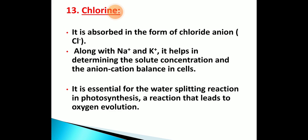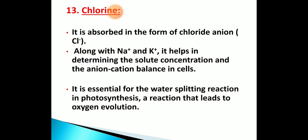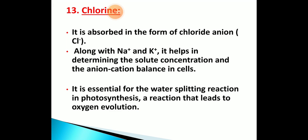Chlorine is essential and is present as chloride ions (Cl⁻). Along with sodium and potassium, it helps determine solute concentration and anion-cation balance. It is essential for the water-splitting reaction in photosynthesis, leading to oxygen evolution. All 13 elements are required in one way or another for proper plant growth and development. Deficiency of these elements will cause some damages, which we will study in the next class.